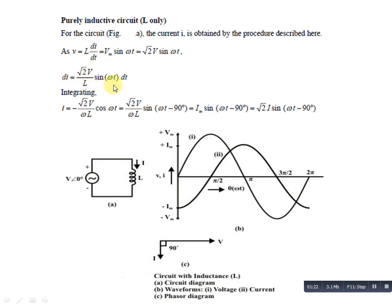Cross multiply करने पर — di निकालना है, तो dt, V के पास चल जाएगा और L divide हो जाएगा। V की value हमें पता है: Vrms = Vm/√2, तो यहाँ से value easily निकाल सकते हैं। फिर इसको integrate करेंगे — di का integration I हो जाएगा। यहाँ constant है root2·V/L, और sin(ωt) का integration होगा।